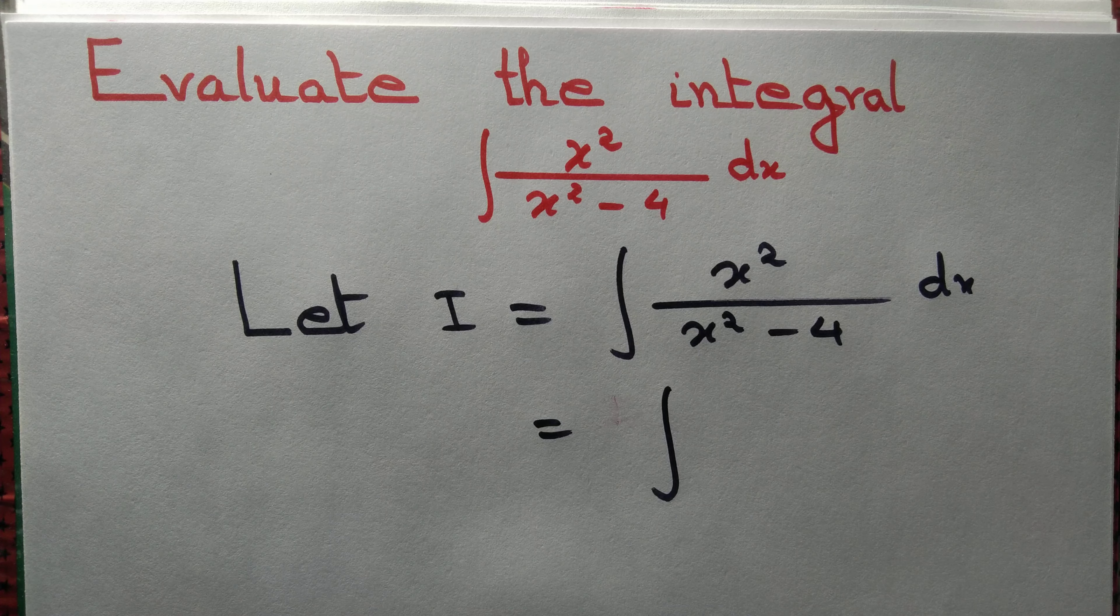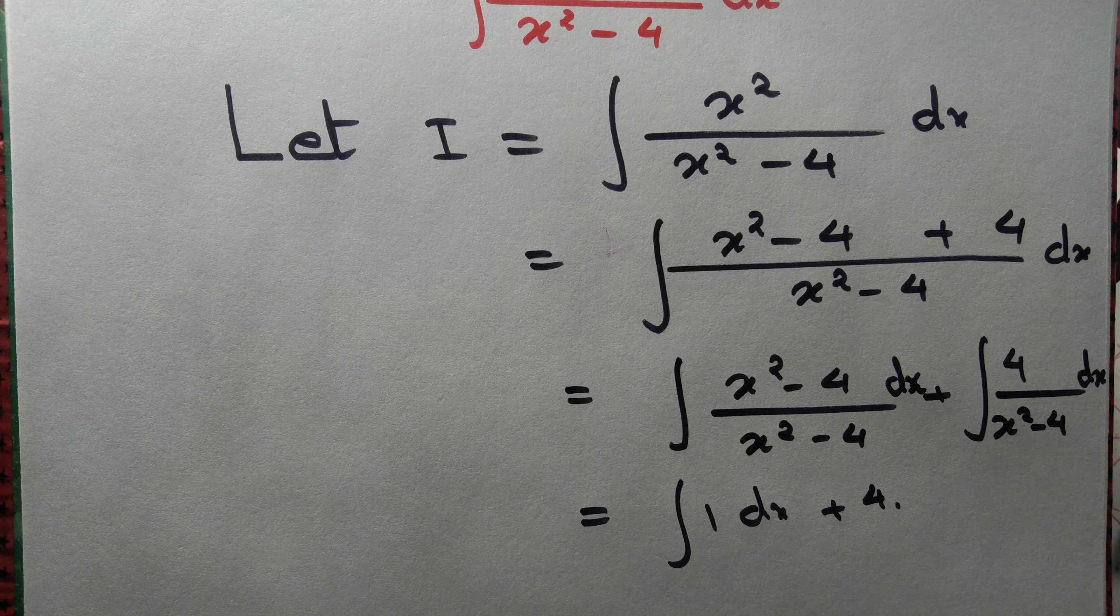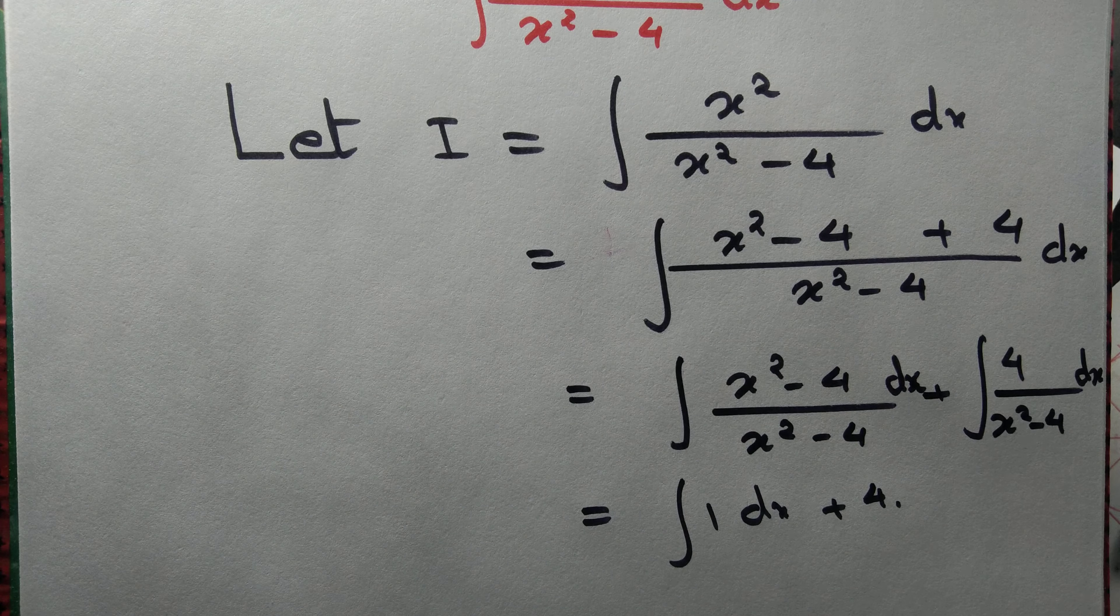This is equal to, now we break the fraction into two parts: x square minus 4 by x square minus 4, we can cancel that out, and 4 by x square minus 4 dx.